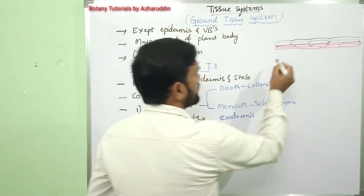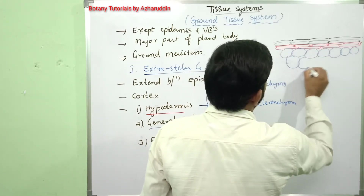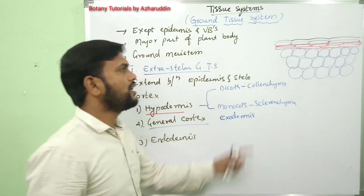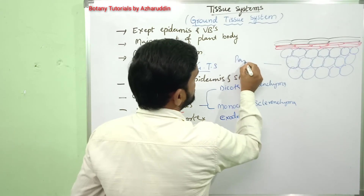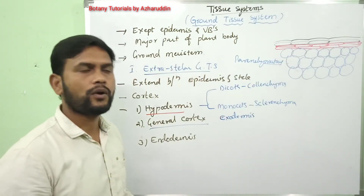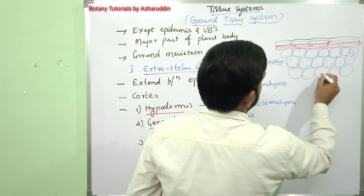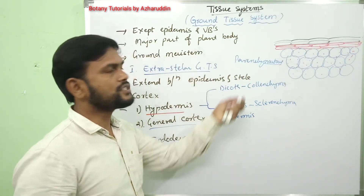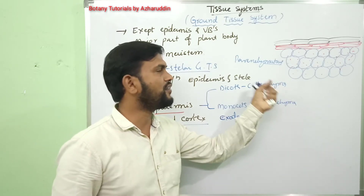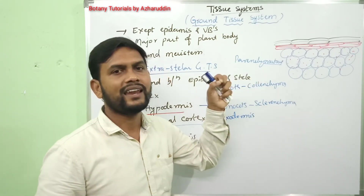Coming to general cortex — it is the central portion of the cortex. It is composed of few layers. The cells are parenchymatous; they are living cells. Sometimes they may contain chloroplasts and perform photosynthesis. General cortex is not well developed in monocot stems because vascular bundles are scattered.